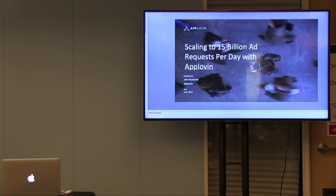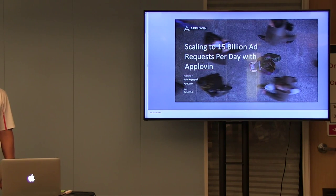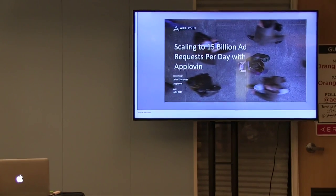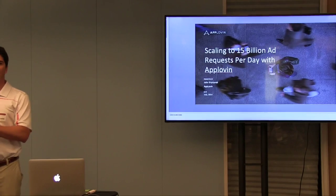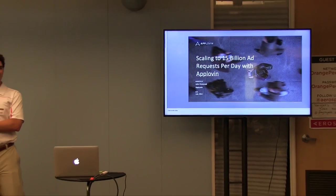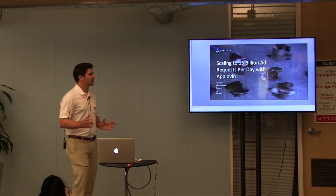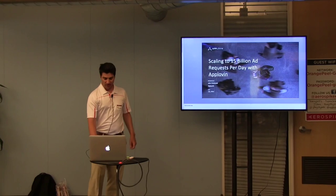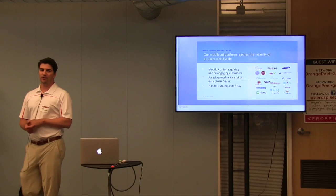This talk is about what it takes to build an infrastructure that can handle billions of requests a day. What it involves is a process for deciding what you put into your infrastructure, how you manage it, and how you make changes to it. I'm going to talk about the various components and how we decided on those. First, I'll tell you what AppLovin is and why we have to handle 15 billion ad requests a day.